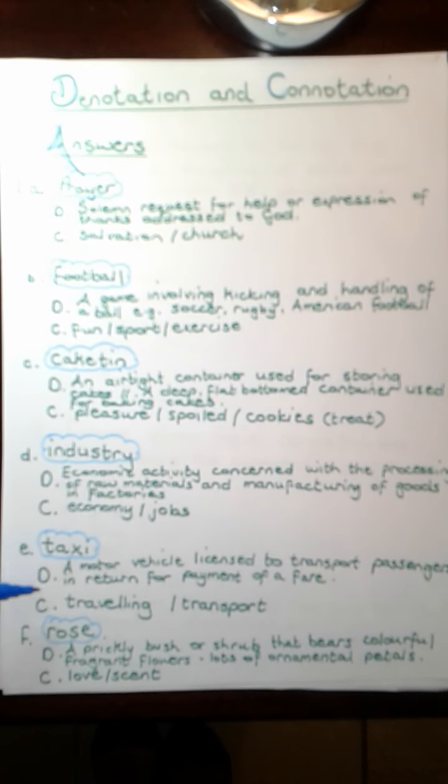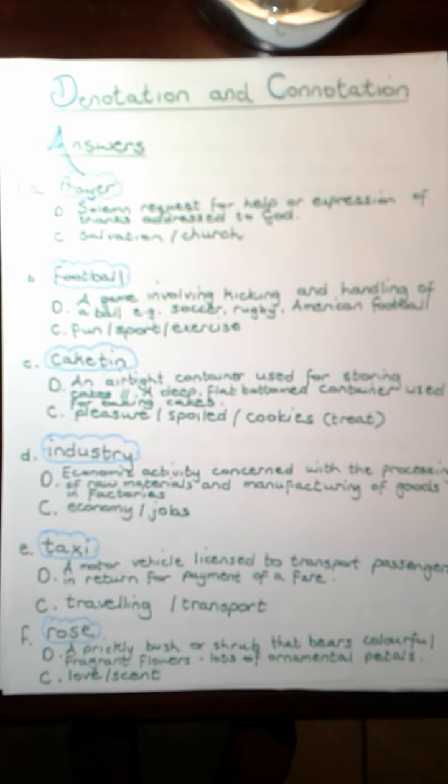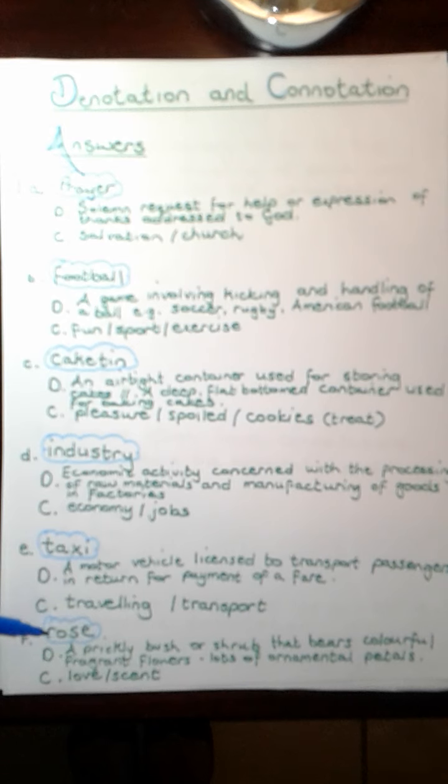A taxi. Dictionary or denotative meaning: a motor vehicle licensed to transport passengers in return for a payment of a fare. Connotative, I think of taxi. It conjures up ideas of traveling, transport maybe, a mode of transport, maybe the word yellow also, if you think of the yellow cabs in America. What do I think of a rose? Dictionary description: a prickly bush or shrub that bears colorful fragrant flowers, lots of ornamental petals. The connotative meaning of a rose is love, scent, perfume, anything that you have in that regard.